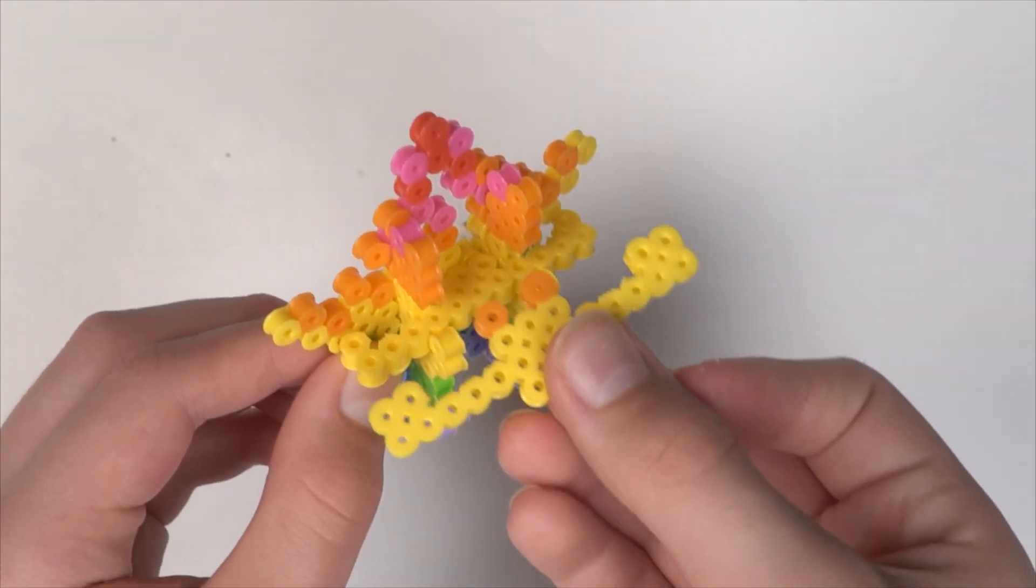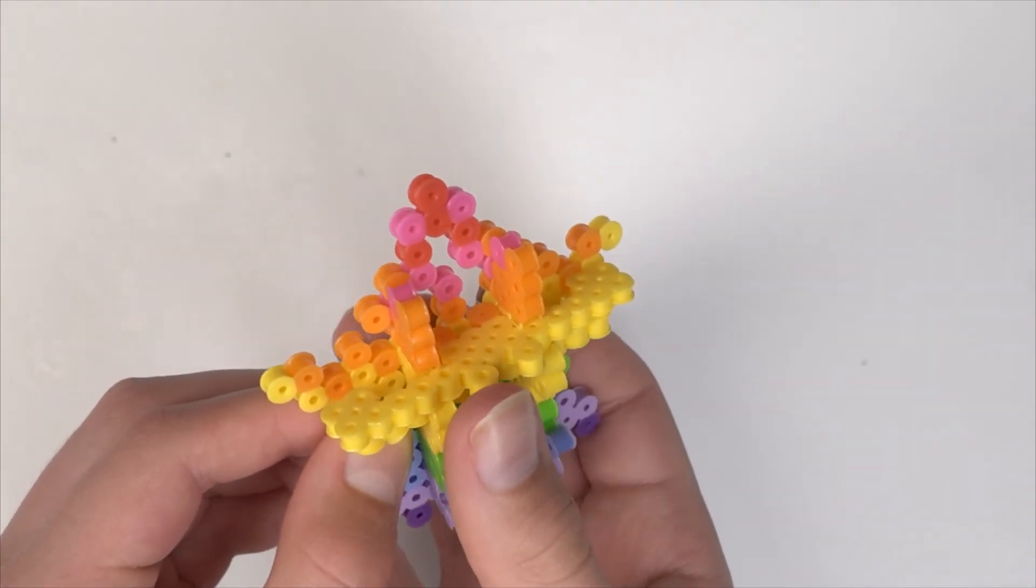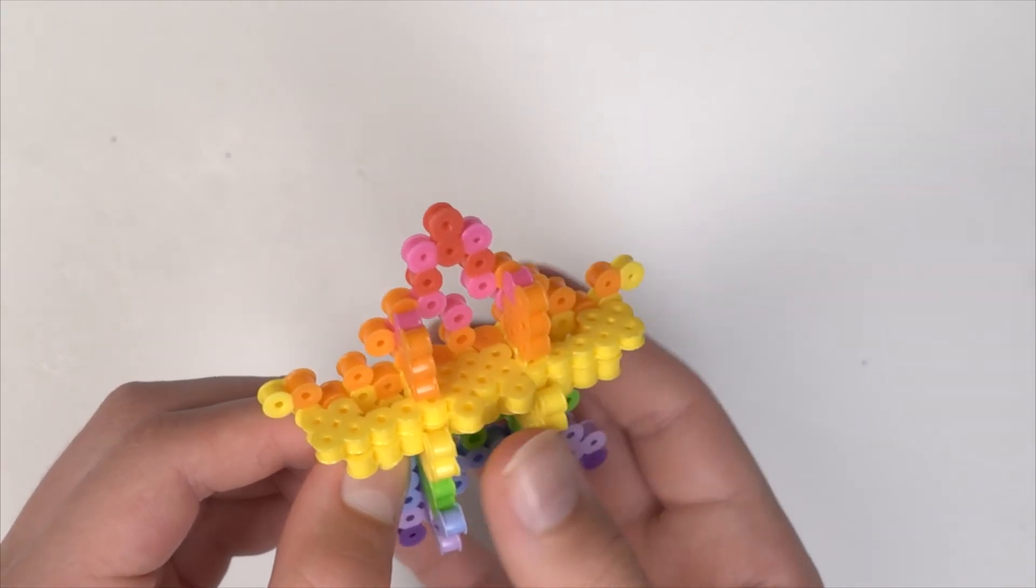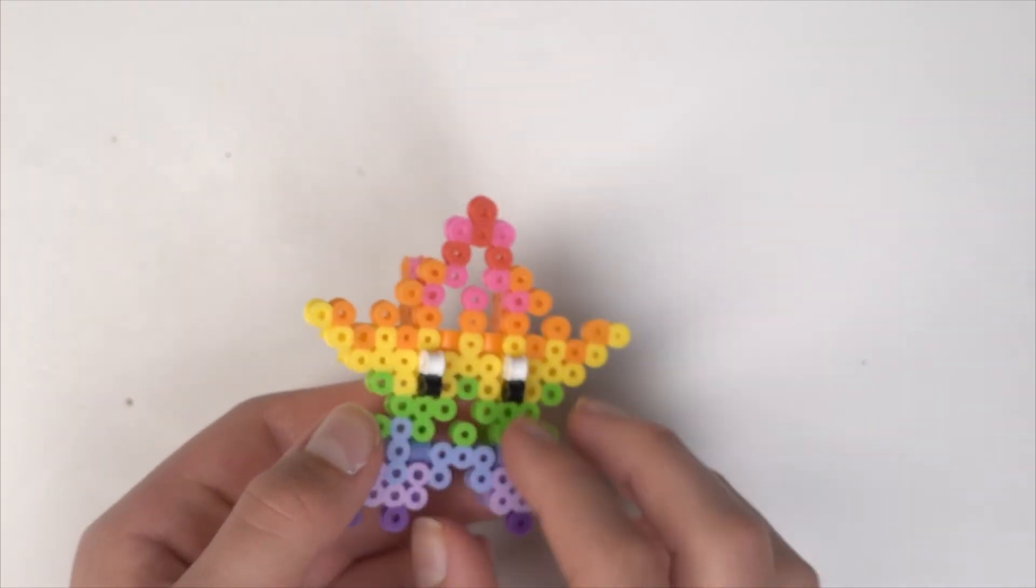Next we're going to grab the yellow piece with two orange beads and we're going to slide it right on top so that it completes the checkered pattern from the front.